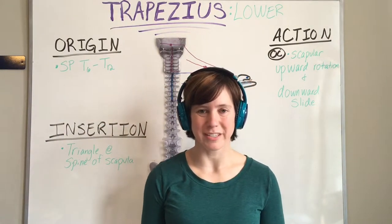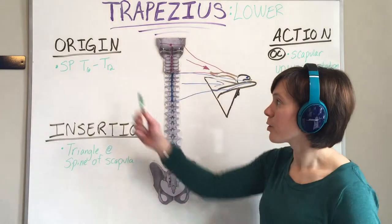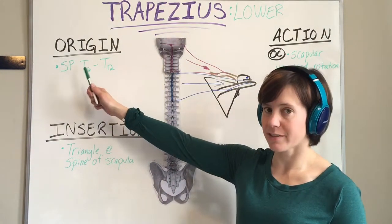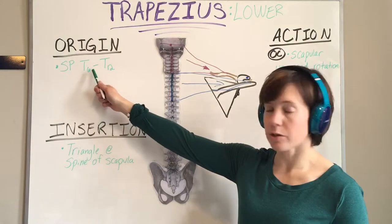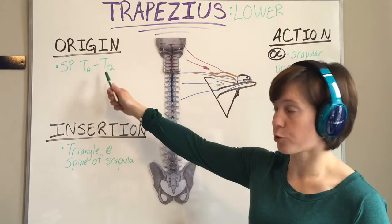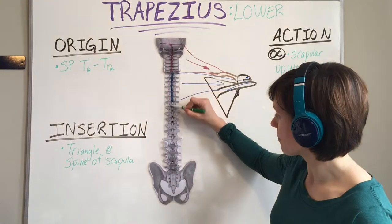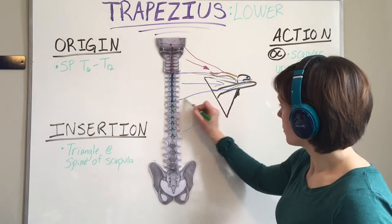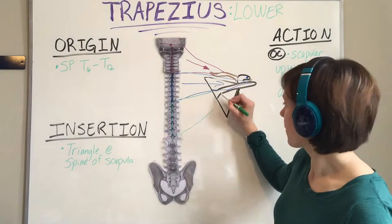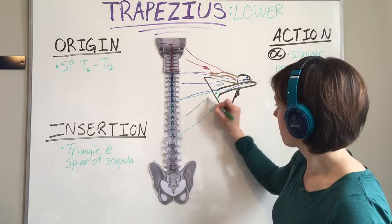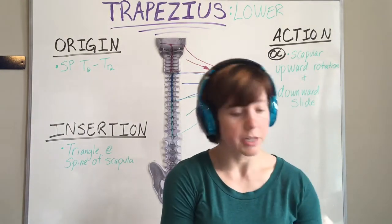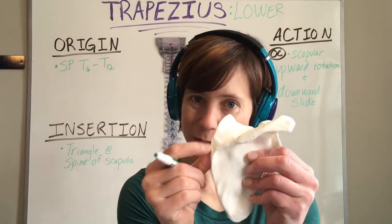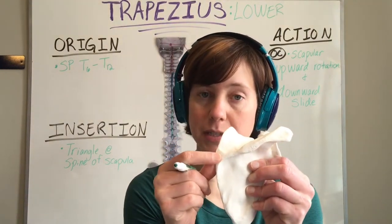Finally, we have the lower trapezius. The lower trapezius will originate on spinous processes of thoracic vertebrae 6 through thoracic vertebrae 12, so pretty much the lower half of the thoracic vertebrae. It will come up and insert on the triangle at the spine of the scapula — this little triangle here is where the lower trapezius inserts.